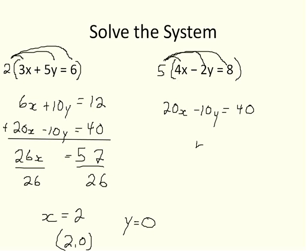So I can say 4 times my x value minus 2y is equal to 8. And 4 times 2 is 8. Minus 2y equals 8. I'll subtract 8 from both sides of the equation. Negative 2y is equal to 0. I divide both sides by negative 2. And y is equal to 0.